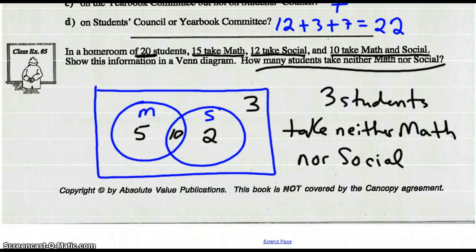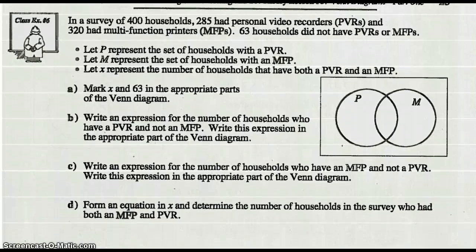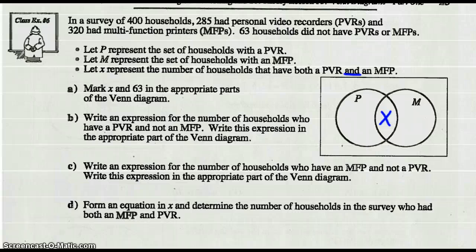One more example, and we've completed this lesson. So let's look at Example 6. In a survey of 400 households, 285 had personal video recorders and 320 had multifunction printers. 63 households do not have a PVR or an MFP. Let P represent the set of households which have a personal video recorder, let M represent the set of households which have a multifunction printer, and we're going to let X represent the number of households that have both — that would be the intersection of PVR and MFP. So we mark X in the intersection, and 63 goes outside the circles inside the rectangle.